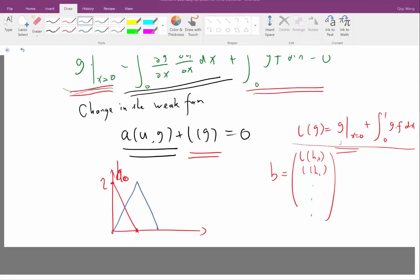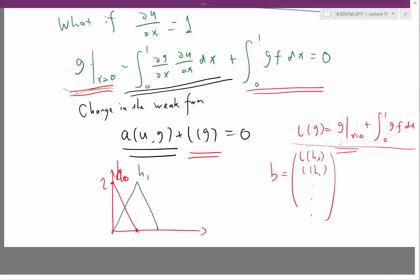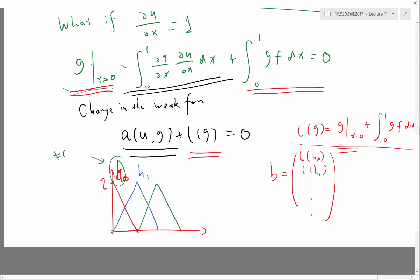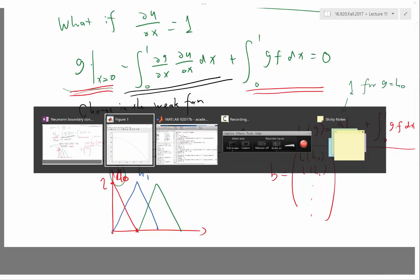which starts from 1 and goes to 0 has a non-zero value at x equal to 0, so this is my G, sorry this is my H0. This is the only one that has a non-zero value, all the other ones are like that so this is H1 and etc.